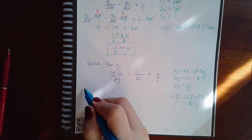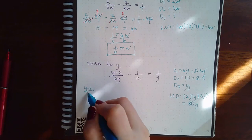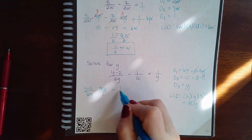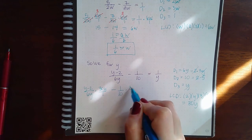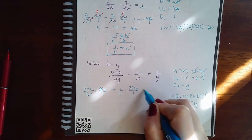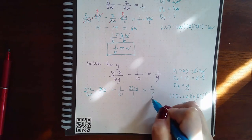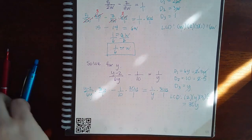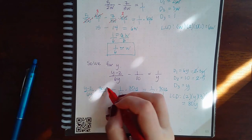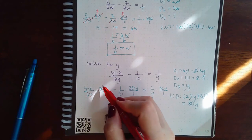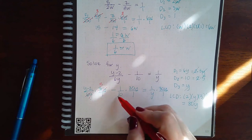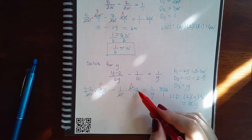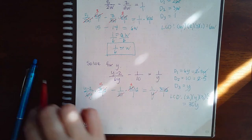So then I'm going to take Y minus 2 over 6Y times 30Y over 1 minus 1 over 10 times 30Y over 1 equal to 1 over Y times 30Y over 1. And so we reduce. The Ys will cancel. 6 goes into 30 five times. 10 goes into 30 three times. The Y is still there. The Y cancels here, and that's it.